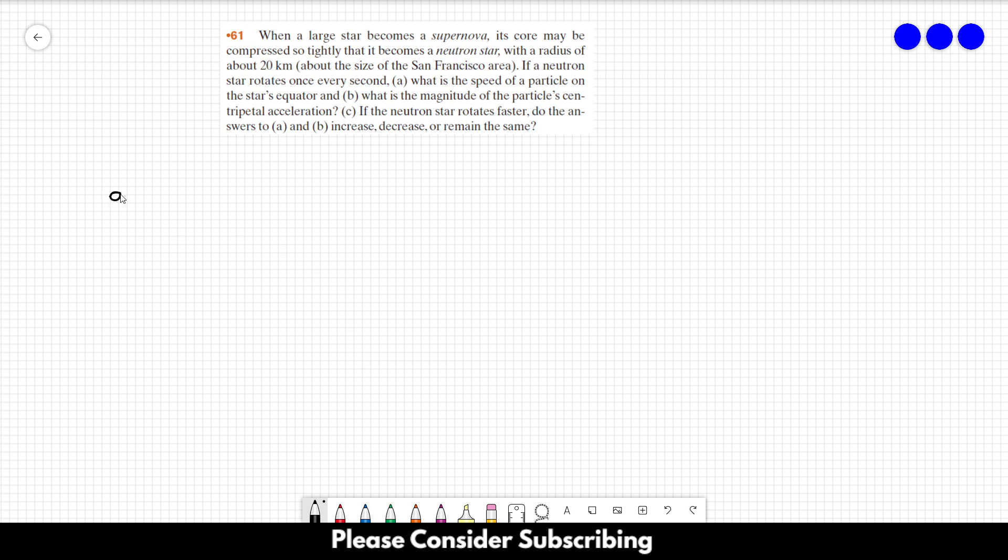For letter A, we want the speed of the particle on the star's equator, and we know that the period of the movement is equal to 2 times pi times r over the speed. So if we want the speed, we have to isolate it. So the speed is equal to 2 pi r over the period.